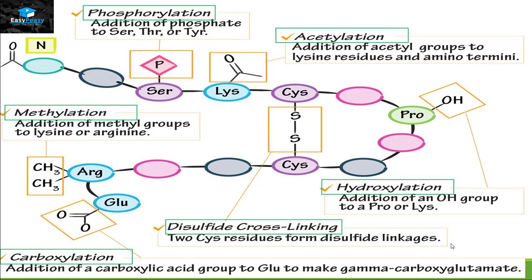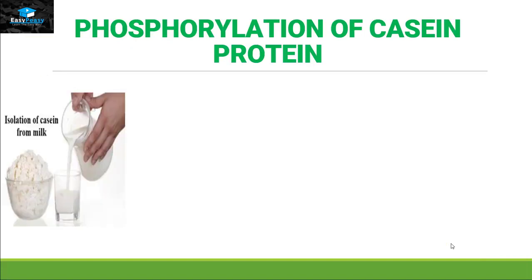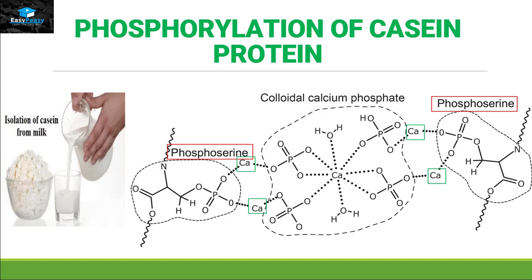The function of each covalent modification differs depending on the type of protein. The first real-life example is phosphorylation of casein protein. Casein is a protein present in milk and it helps the attachment of calcium ions within our bones. Looking closely at this protein, we can see it has a lot of serine amino acids, and those serine amino acids are attached with a phosphate group. The phosphorylation occurring on serine helps the attachment of calcium ions, which is how calcium is attached to our bones and makes us stronger.